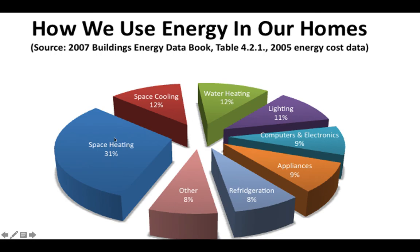Lastly, looking at how we use energy in our homes: a large portion goes to heating, which requires a lot of energy. Significant amounts also go to cooling, water heating, lighting, and electronics. Refrigeration alone accounts for nearly 10% of household electricity use. We'll start diving into different types of energy more specifically as the unit progresses, so save your questions for class.